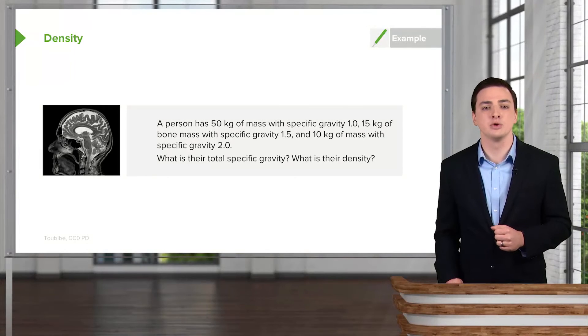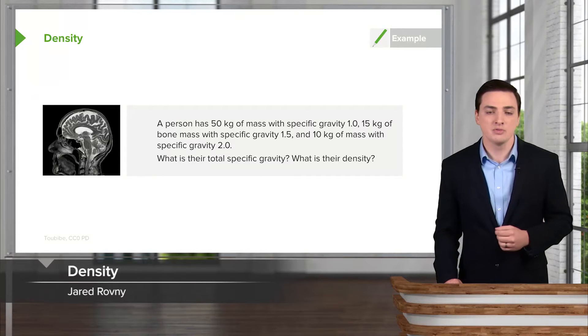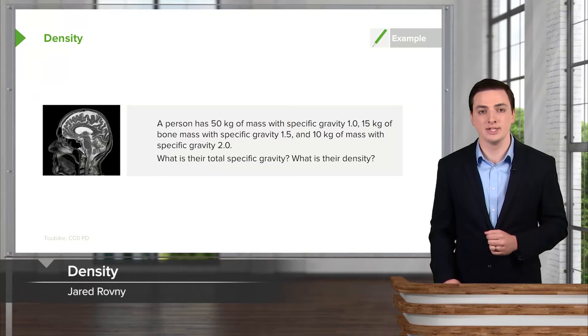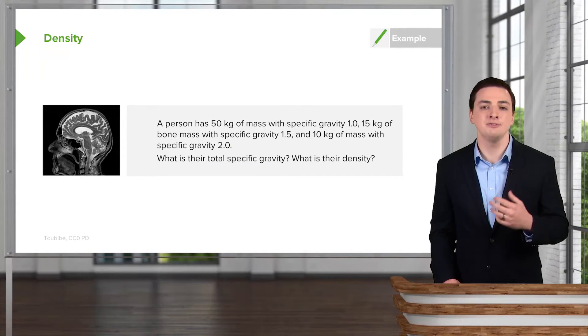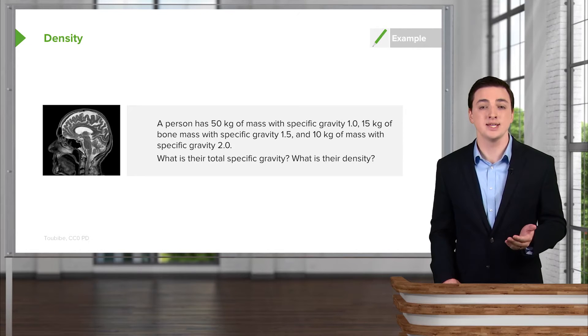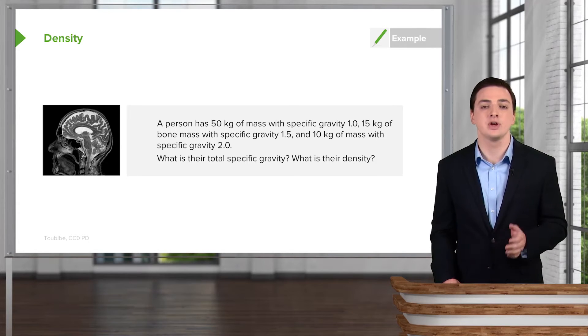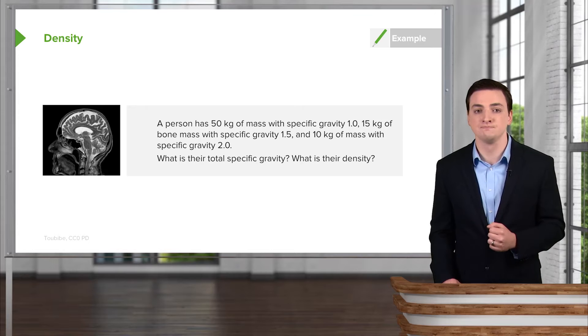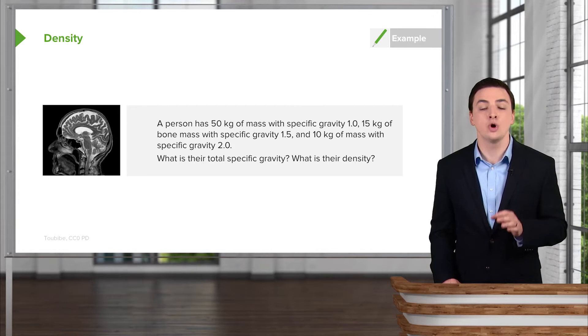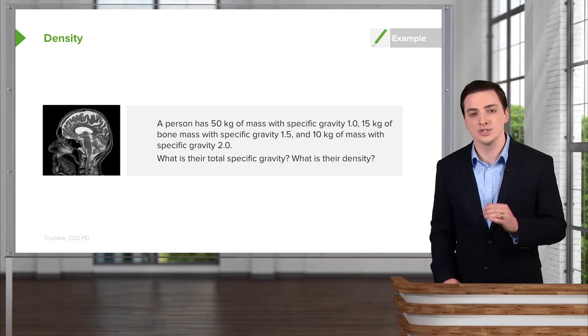Let's do a quick example before we move any further. This discusses the density of a person as well as the specific gravity. Suppose a person has 50 kilograms of mass with a specific gravity of 1.0, 15 kilograms of bone mass with a specific gravity of 1.5, and then 10 kilograms of mass with a specific gravity of 2.0, much heavier. The question might be: what is the total specific gravity, and then what is their density?